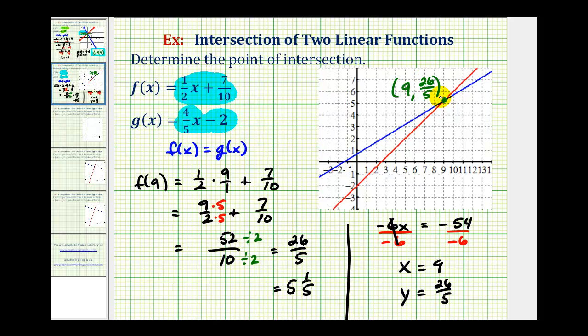And the graph does verify our work. Notice how the x-coordinate is positive 9, and the corresponding y-coordinate does appear to be a little bit more than 5, or in this case, 5 and 1/5. So you can see if we just tried to solve this graphically, it would have been very difficult to determine the y-coordinate of this point of intersection.